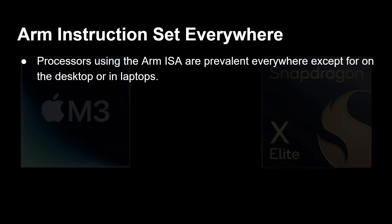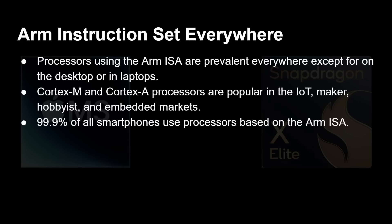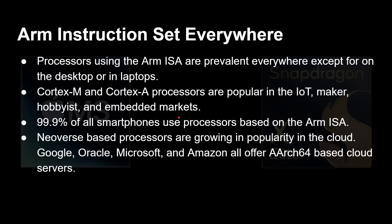The ARM instruction set is basically everywhere and ubiquitous — except in desktops and laptops, which is why what Apple and Qualcomm are doing is so important. Cortex-M and Cortex-A processors are popular in IoT, maker, hobbyist, and embedded markets — Raspberry Pi uses a Cortex-A, and Arduinos use Cortex-M processors. 99% of all smartphones use ARM-based processors. Neoverse processors are growing in cloud popularity due to cost and power efficiency — Google, Oracle, Microsoft, and Amazon all offer AArch64-based cloud servers. ARM processors now span from tiny microcontrollers costing a few dollars right up to cloud servers, with desktops and laptops as the final frontier.